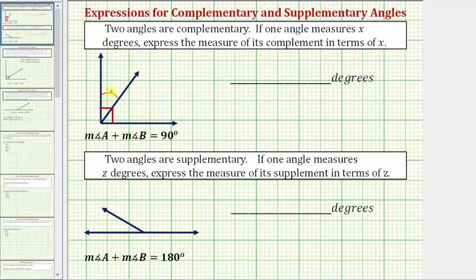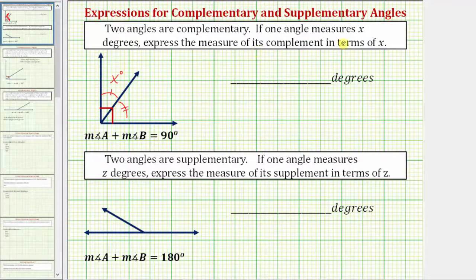So this angle and this angle are complementary. If one angle measures x degrees — let's say this angle here measures x degrees — we're asked to express the measure of its complement in terms of x. Well, the complement of this angle would be this angle here, and because the sum of the measures of the angles equals 90 degrees, this angle must be equal to 90 minus x degrees.